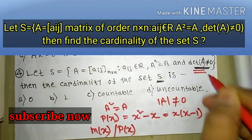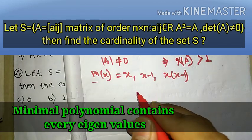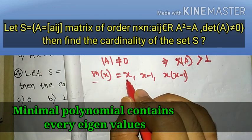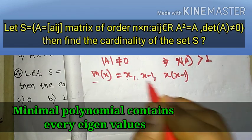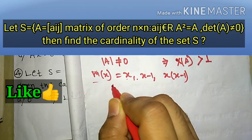Given the condition that the determinant of A is non-zero, we know that every minimal polynomial contains all eigenvalues, and every matrix satisfies its minimal polynomial.